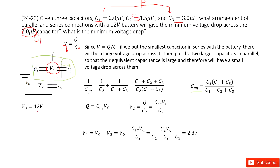Next, we need to find V2. V2 can be written as the total charge Q divided by C2, and C2 is given. The charge Q equals the equivalent capacitance times V0, the source voltage, because the charge in the main branch flows through C2. So V2 equals Q divided by C2, which we can express as a function of V0 and the equivalent capacitance.